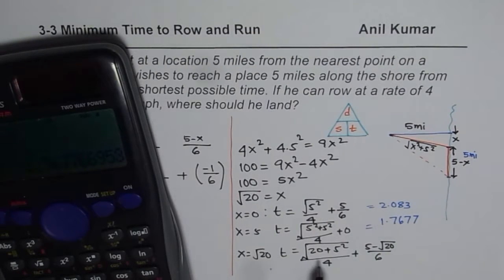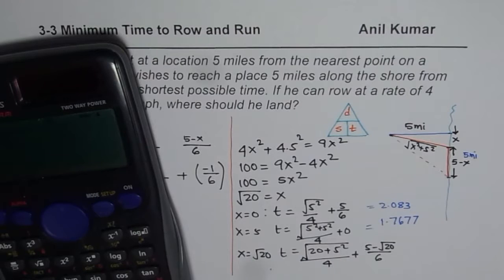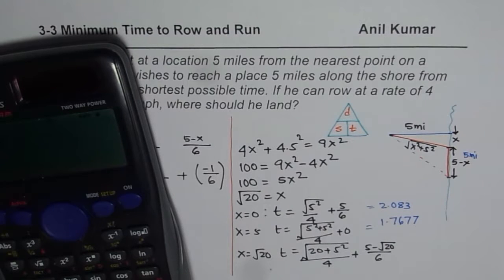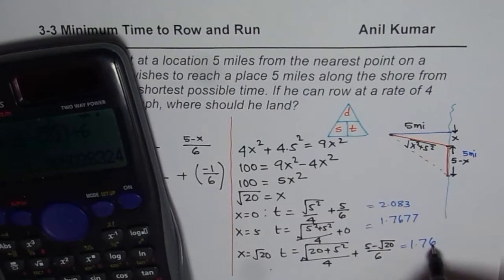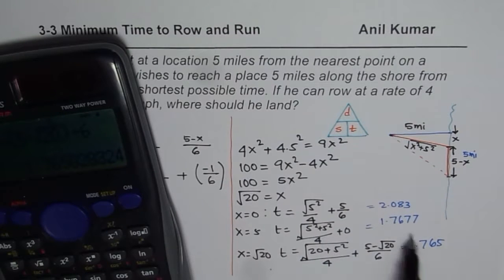For x = √20: T = √(20 + 25)/4 + (5 − √20)/6. Computing this gives approximately 1.765 hours. It is very close to 1.7677, but it is shorter than that — at the third decimal place, this time is lower than the time when x = 5.